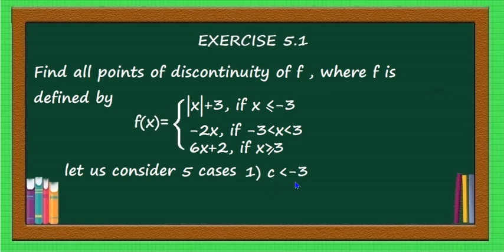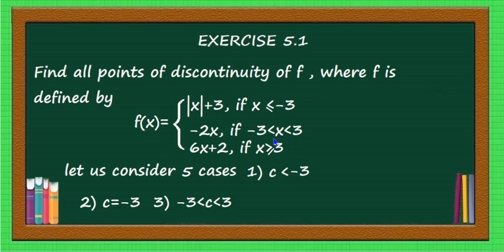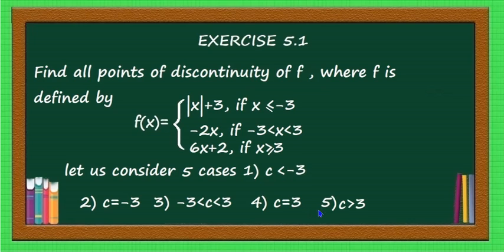Case 1: c < -3. Case 2: c = -3, where the function switches over — you have to take that point separately. Case 3: c lies between -3 and +3. Case 4: c = 3, where the function switches over, so that point is taken separately. Case 5: c > 3. In all these cases, you have to check the continuity of this function.